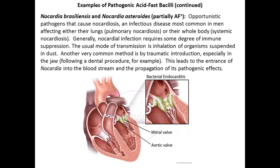This is an opportunistic pathogen that can affect the lungs, which also stains gram positive — Nocardia. This is rare, but it can cause infections in the valves and can attach to the valves inside the heart.